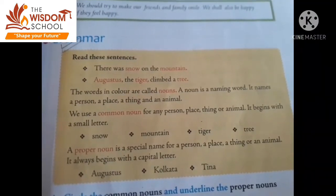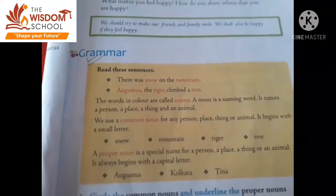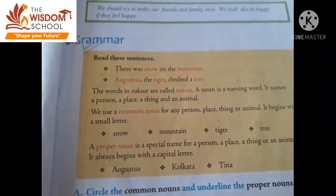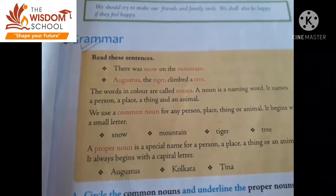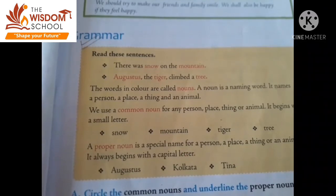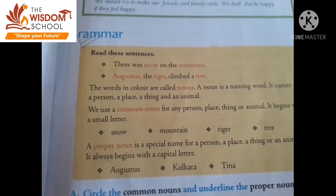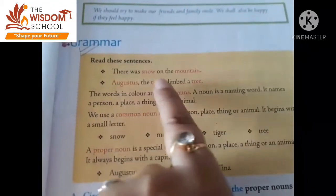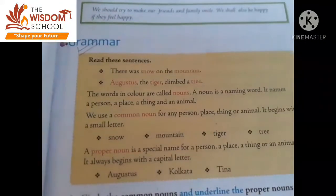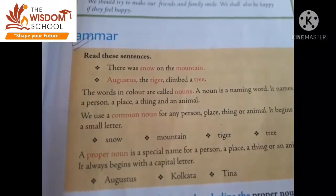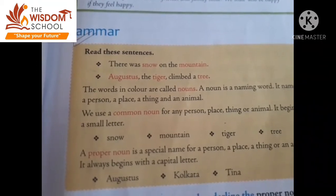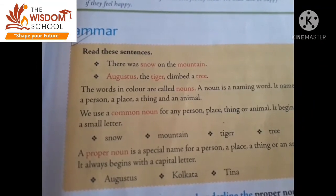Yes students, have you opened page number 5? See, read these sentences. There was snow on the mountain. Augustus, the tiger, climbed a tree. Baccha, you can see the words shown in color — these words are called nouns. Snow, mountain, Augustus, tiger, tree — yeh sab kya hain? Nouns.